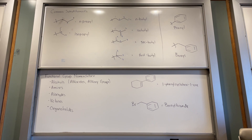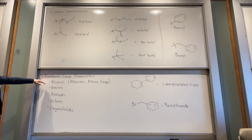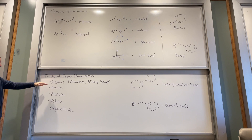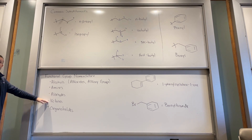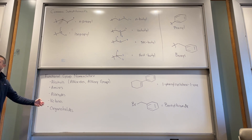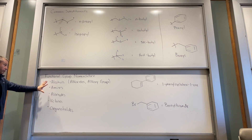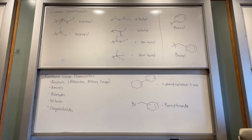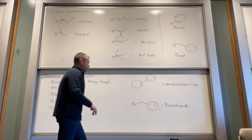I want to go over just how we're going to name functional groups. The book covers naming all functional groups, probably more than what's on the list I gave you. We're not going to get into the weeds that much. The first functional groups we're going to go over in terms of reactivity are alcohols, amines, aldehydes, and ketones — and then organohalides later, which are easy to name. Those are the five functional groups I expect you to know how to name. The molecules I give you won't be complex.